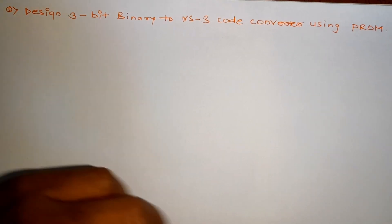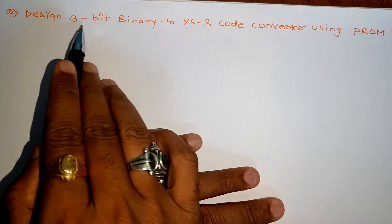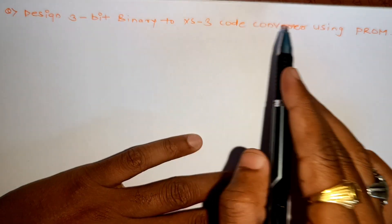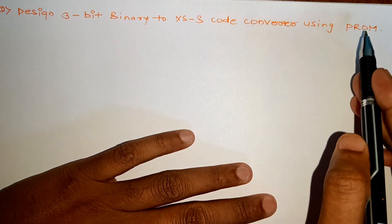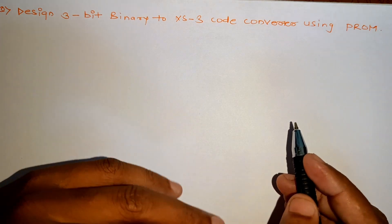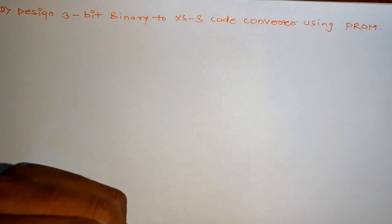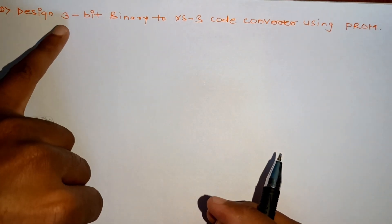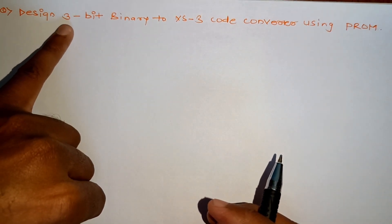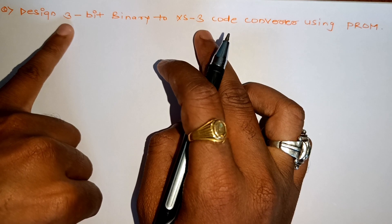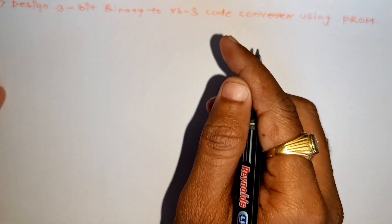Hello everyone, let's take the next example as design of 3-bit binary to XS3 code converter using programmable read-only memory. As usual, the very first step will be to identify the decoder size. So here we have design 3-bit binary to XS3, so definitely the number of inputs.